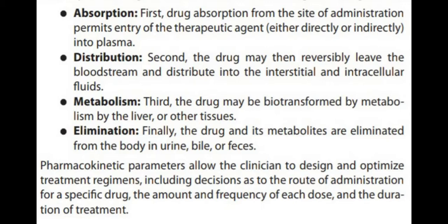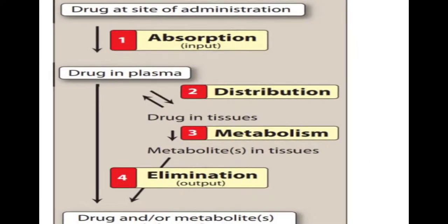Pharmacokinetic parameters allow the clinician to design and optimize treatment regimens, including decisions about the route of drug administration for a specific drug — as we saw with the syrups — the dose (such as two spoons), the frequency of dosing (twice a day, as seen in the prescription), and the duration of treatment (such as seven days for the tablet Cyzine, or three days for the other tablet).